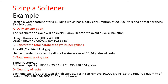Now, let's see an example. In order to size a water softener, we need to design a water softener for a building that has a daily consumption of 20,000 liters and a total hardness of 400 ppm.